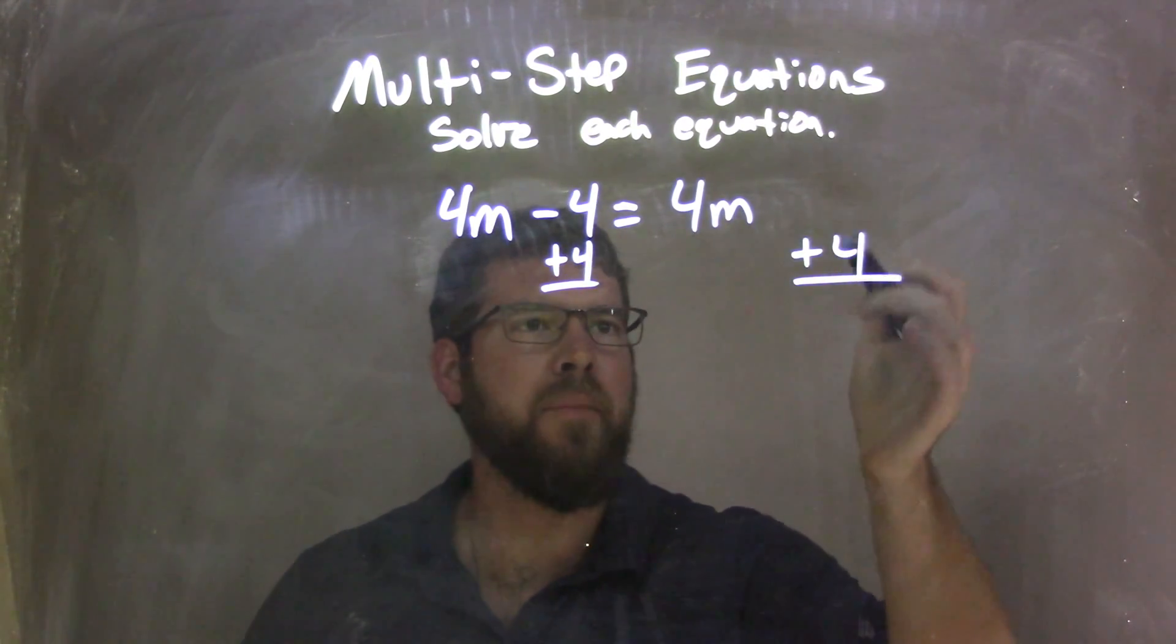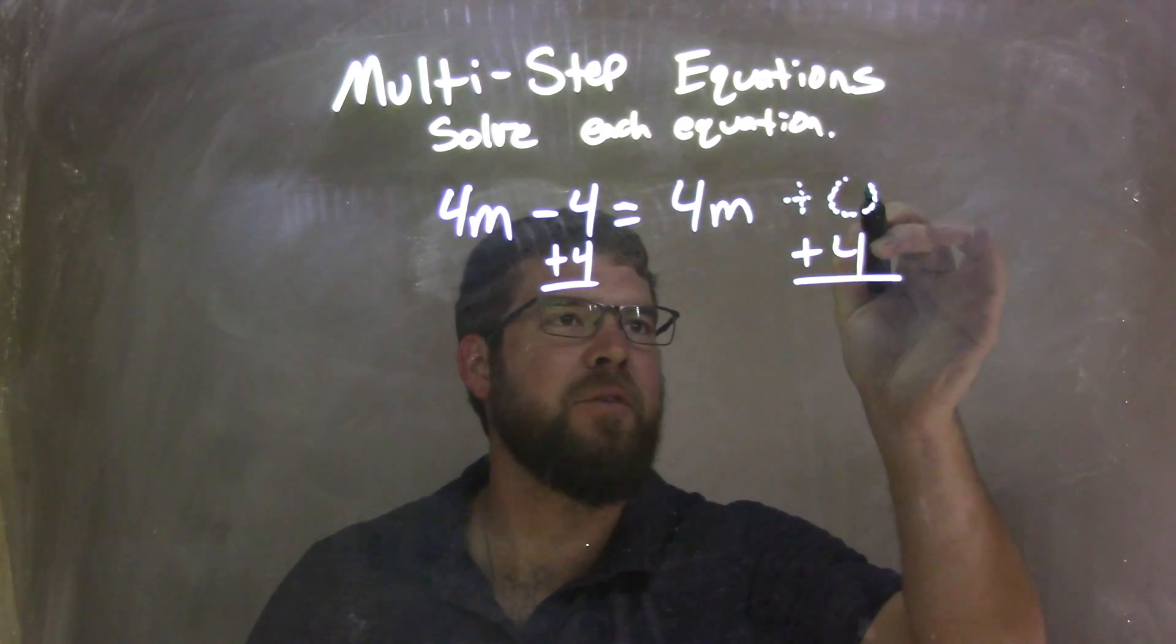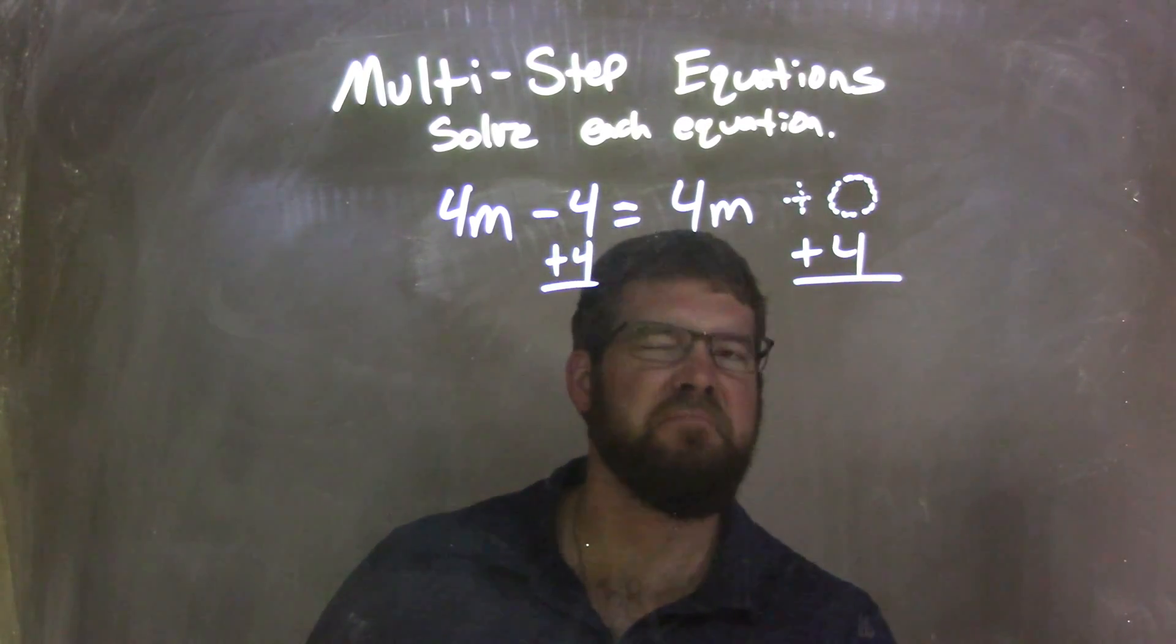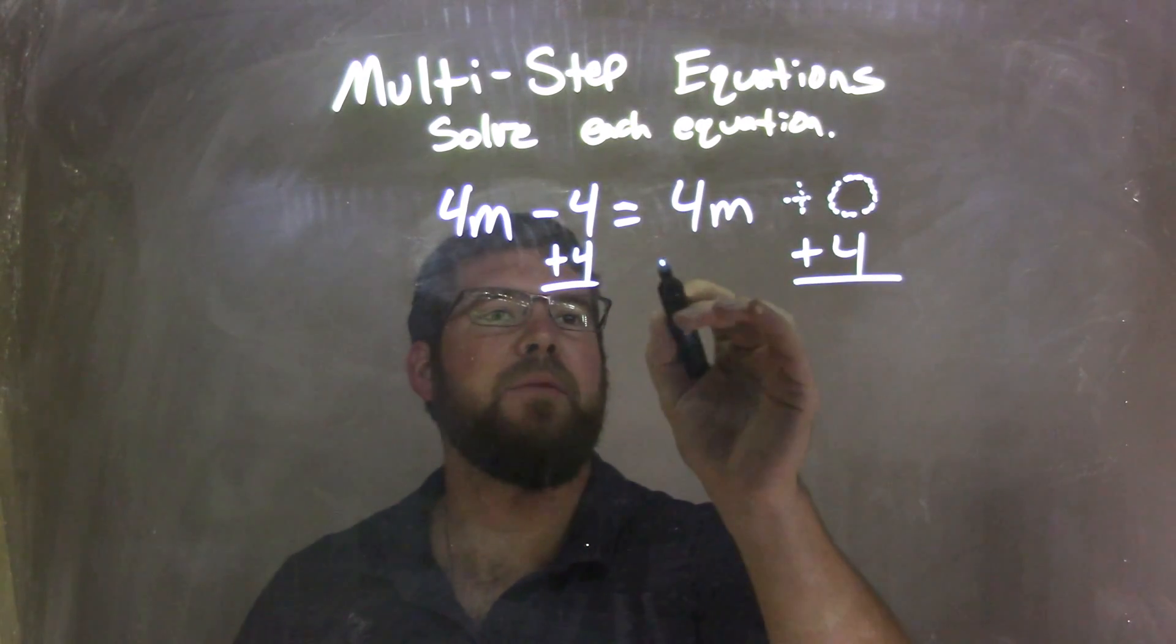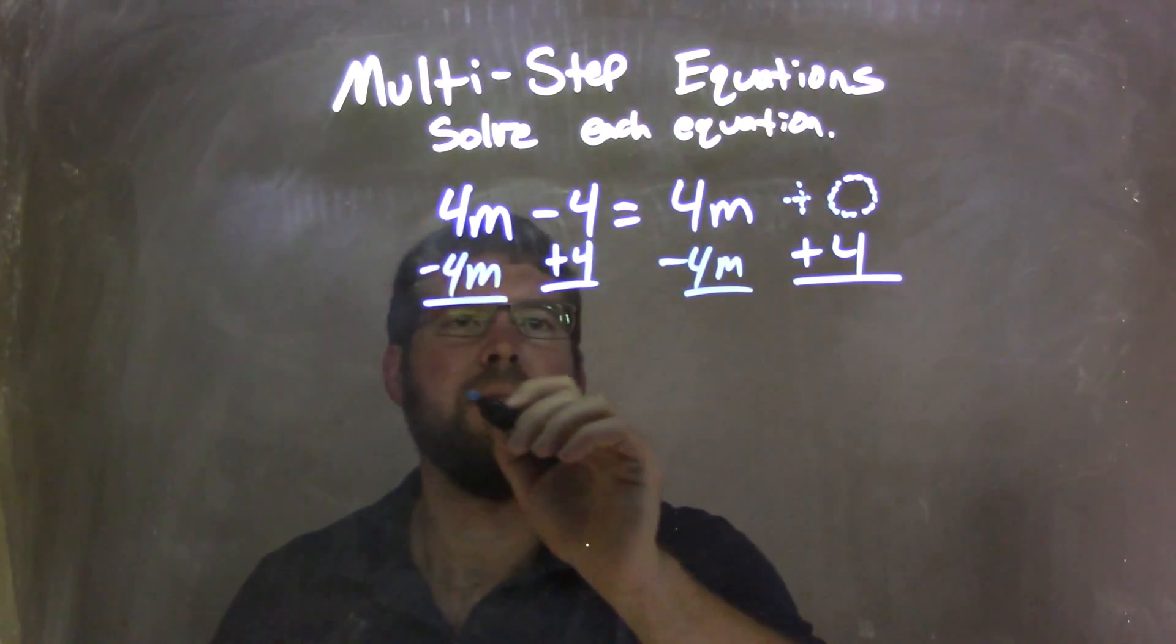There's no numbers, so we can always imagine like there's an imaginary 0 there, right? Adding 0 doesn't change anything, it's up to you. And then I'll subtract a 4m to both sides, okay?